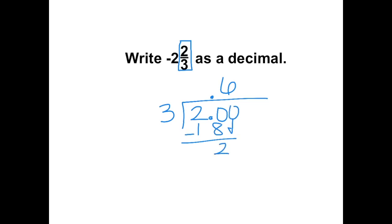Subtract and we get two, bring down another zero. Three goes into twenty again six times, which gives us eighteen. So we notice that there's a pattern and we're going to keep getting the number six.